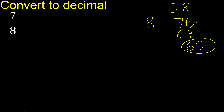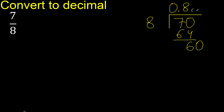Now we have 60. 8 multiplied by 8 is 64 — that is excessive. So try 8 multiplied by 7, which is 56.